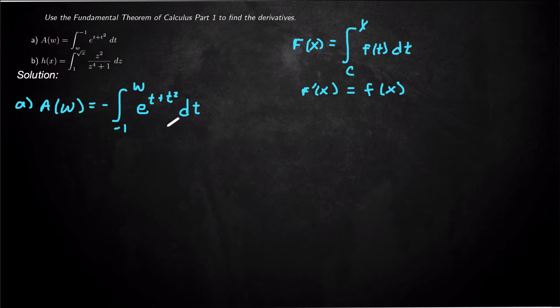So now we can find the derivative. It just gets that extra negative out front because of us wanting to swap the bounds. So now we're in this form: constant lower bound, variable upper bound, function dt. So then all we have to do is take this function e to the t plus t squared and plug in this upper bound. So the derivative A prime of w is going to be negative e to the w plus w squared.